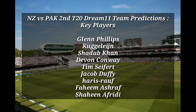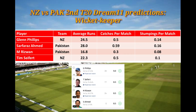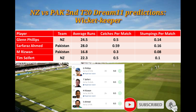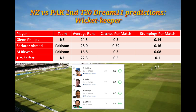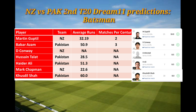The key players in this tournament currently include Phillips, Corey Anderson, Shahab Khan, Conway, Shafford, Duffy, Rauf, and Shaheen Afridi — these players performed well in the first T20. For wicketkeeper batsmen, you can see the average runs scored, catches, and stumpings for each player. In the last match, Shafford scored 77 Dream11 points, the highest among wicketkeeper batsmen, so Phillips and Shafford will be good choices.